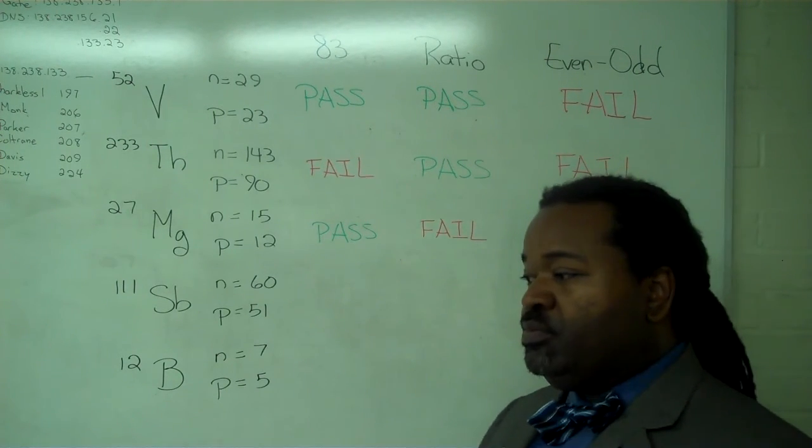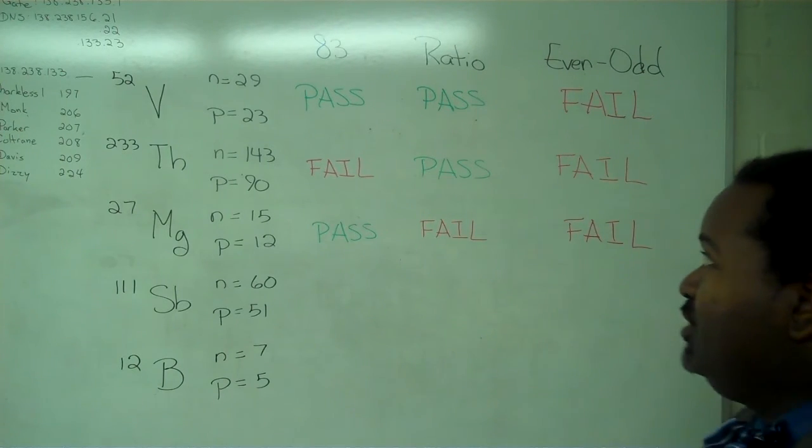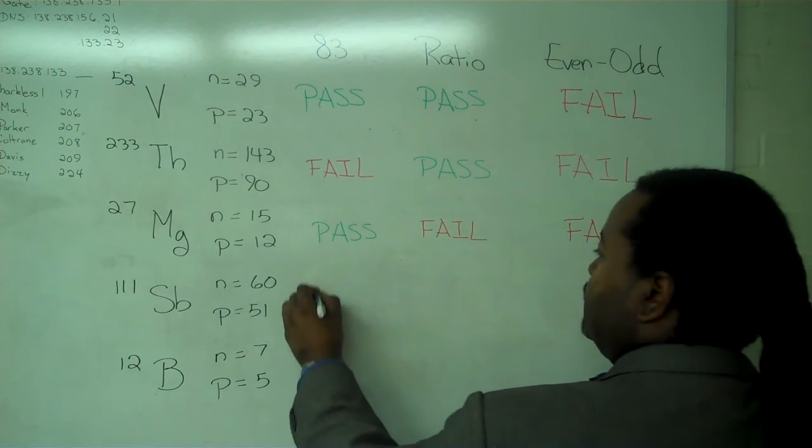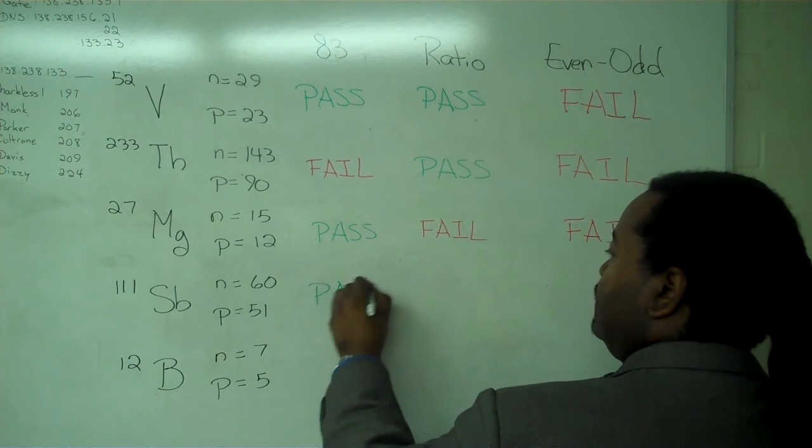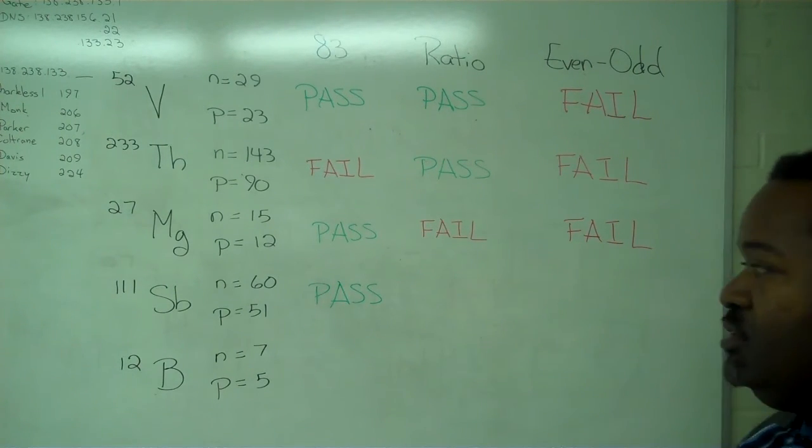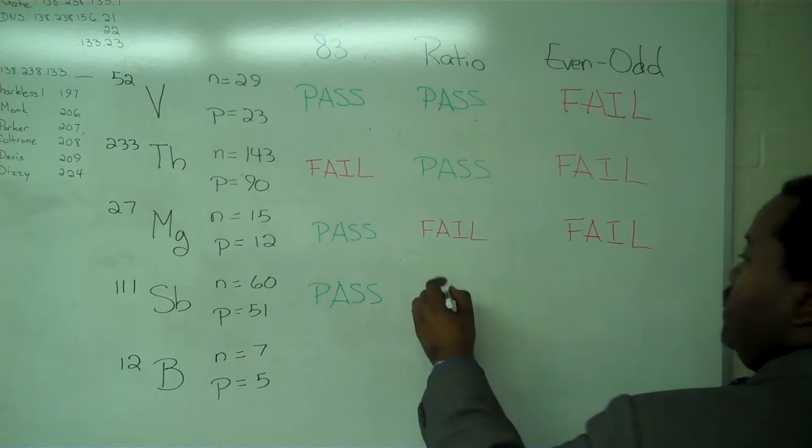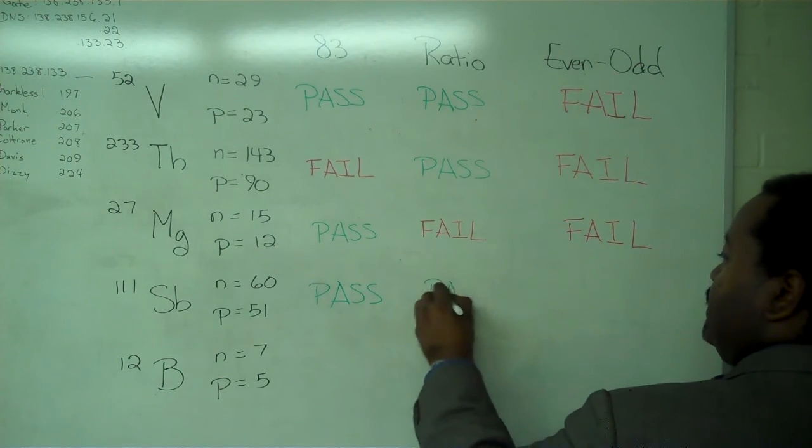For antimony, the number of protons is clearly less than 83. So that's a pass. 60 divided by 51 is larger than 1. So that is also a pass.